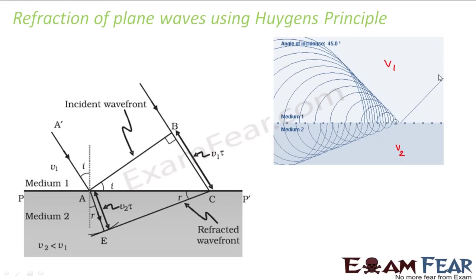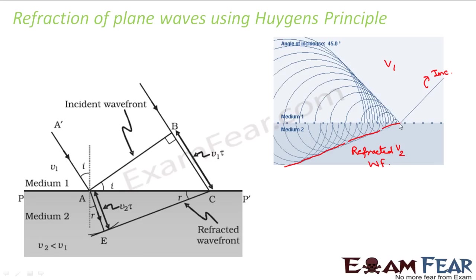The concept will still remain the same. Here also, this is my incident wave front and this is my reflected wave front, but refracted — in this case this is my incident wave front and this is my refracted wave front. Now, this common tangent is the refracted wave front. Every time any point of the incident wave front interacts with this boundary, it gives rise to secondary waves.